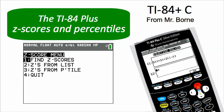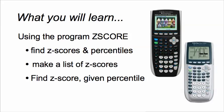I've got a program called z-score that will take care of everything. You will learn in this video how to find z-scores and the associated percentiles, how to make a list of z-scores if you've already got a list of raw values, and third, how to find a z-score by giving the percentile.